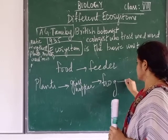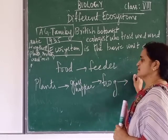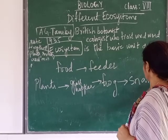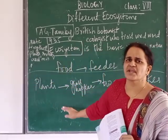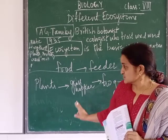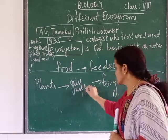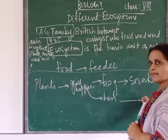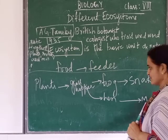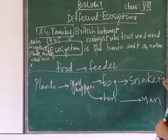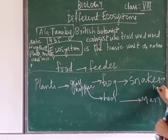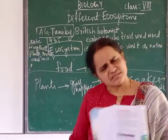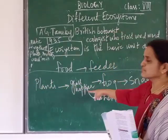The grasshopper is eaten by a frog — or a hen also eats grasshoppers. The frog in turn is taken up as food by snakes. This gives us a simple food chain: plants → grasshopper → frog → snake.